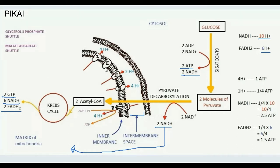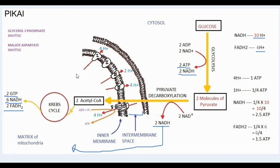For FADH2, as it goes from complex 2 to complex 3 to complex 4, there is a transfer of 2 + 4 = 6 hydrogen ions in total. So to remember: for NADH there is a net transfer of 10 hydrogen ions, and for FADH2 it is 6 hydrogen ions transferred from the matrix to the intermembrane space. These values will be required in the production of ATP.